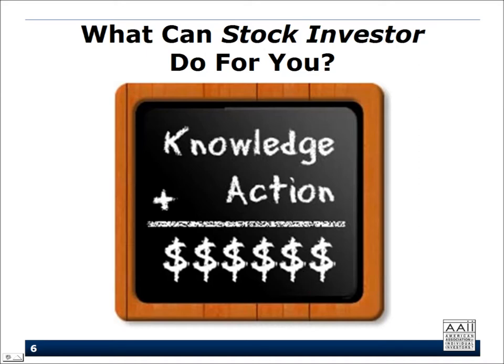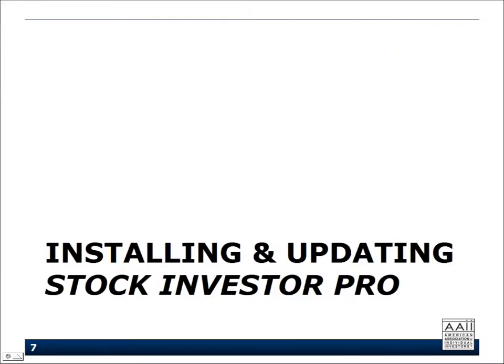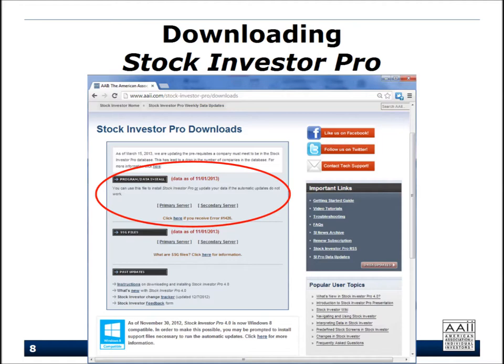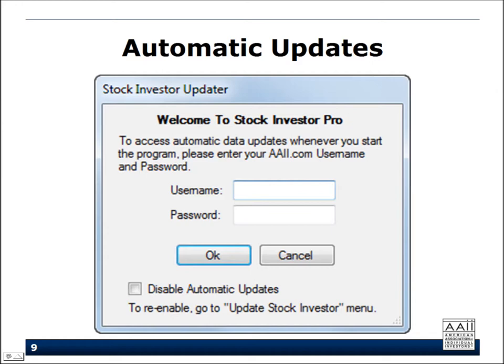You can go to the Stock Investor Pro area of the website and download the full program and data installation file. This file serves for first-time installation or reinstallation if files get corrupted or a hard drive crashes. The first time you open the program after installing it, you're prompted to enter a username and password used for the automatic update process. Whatever login you use to access the AAII website is what you enter.